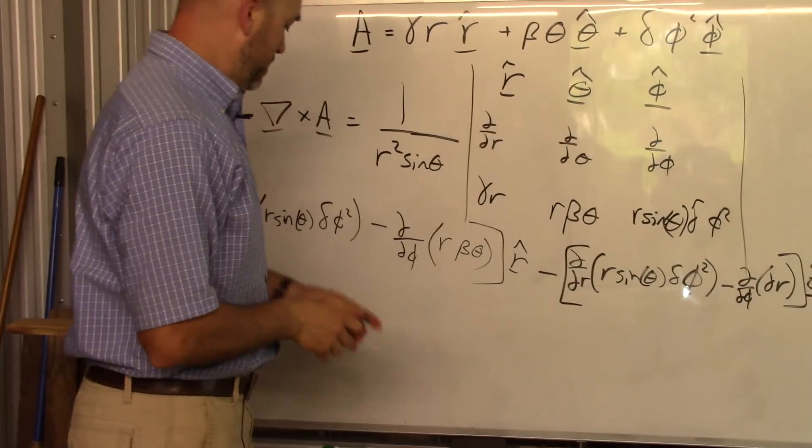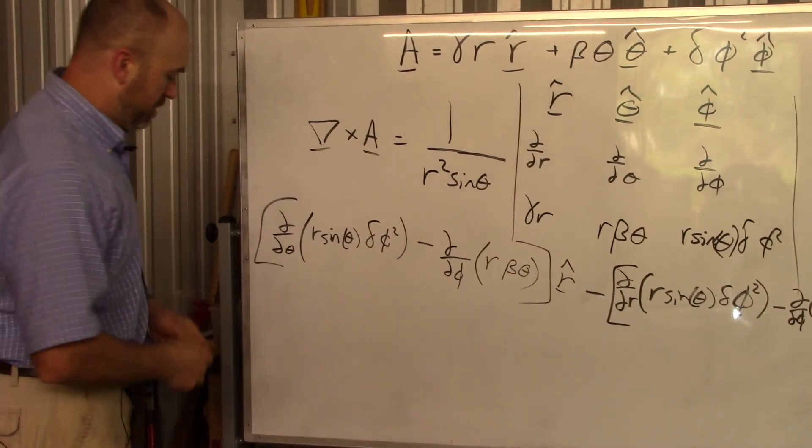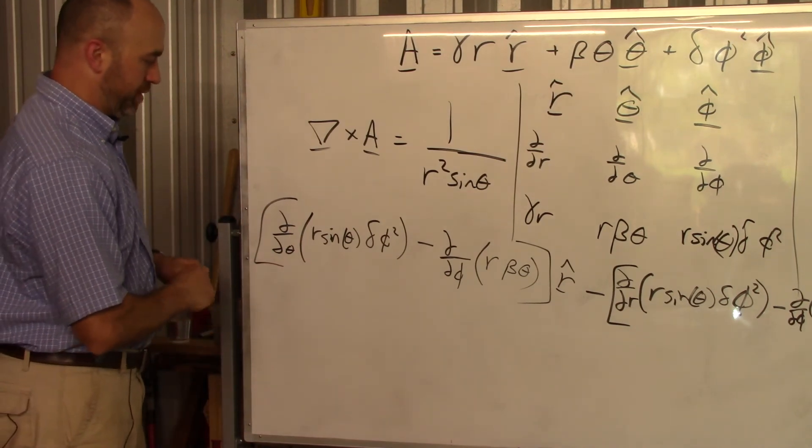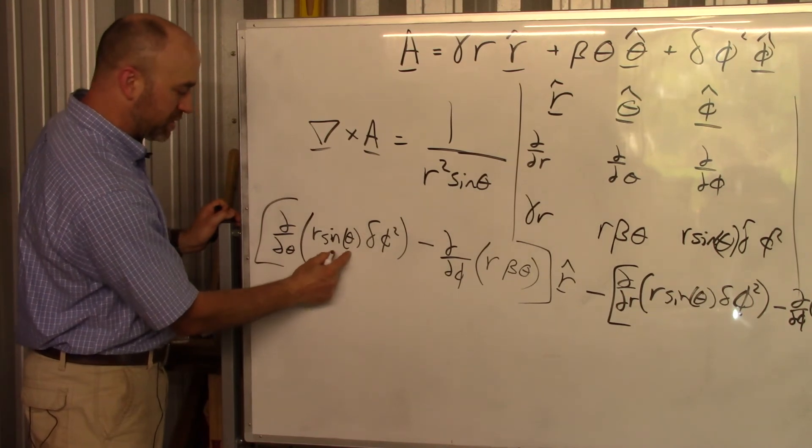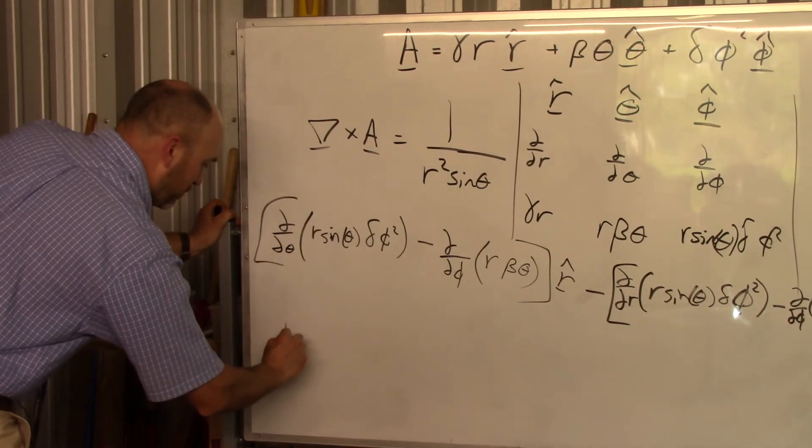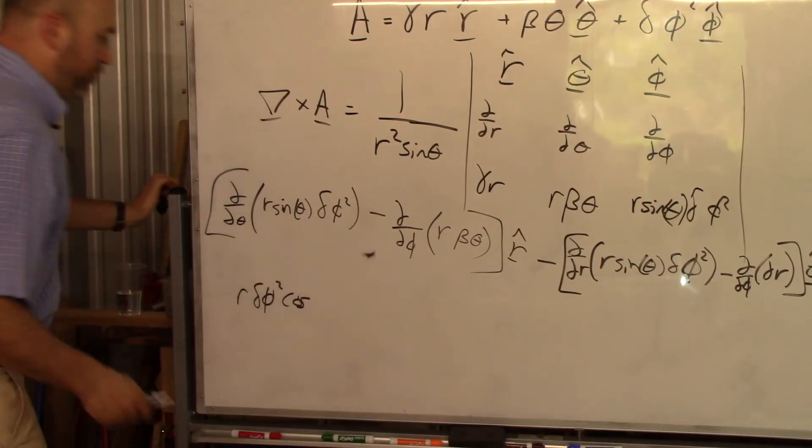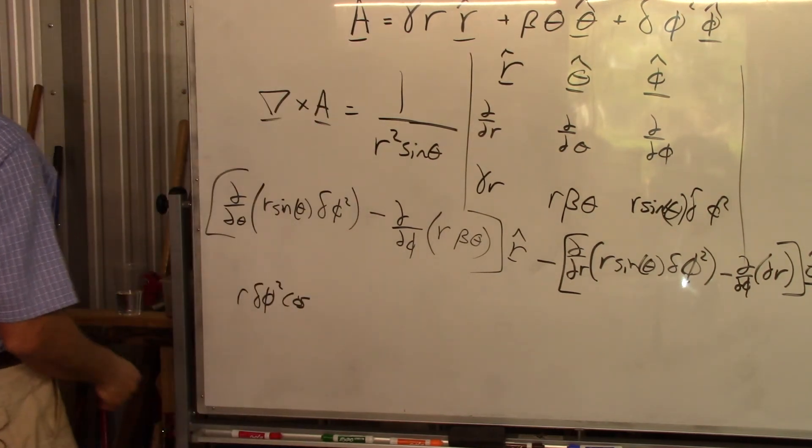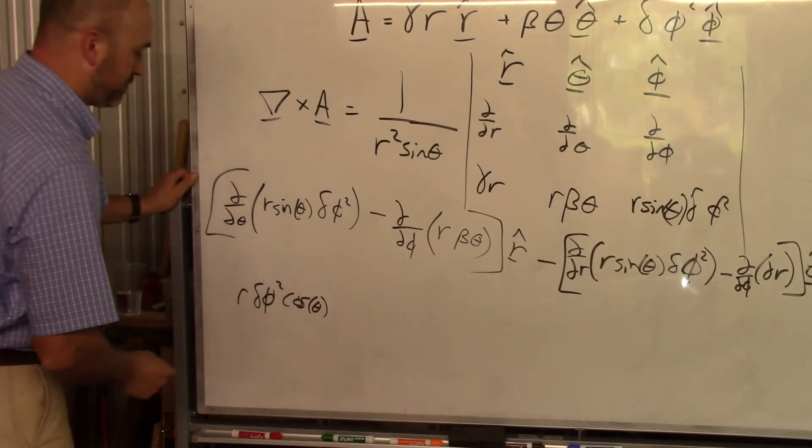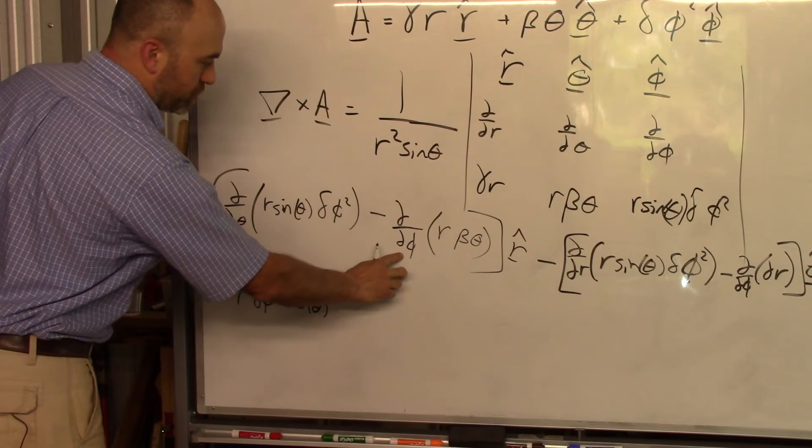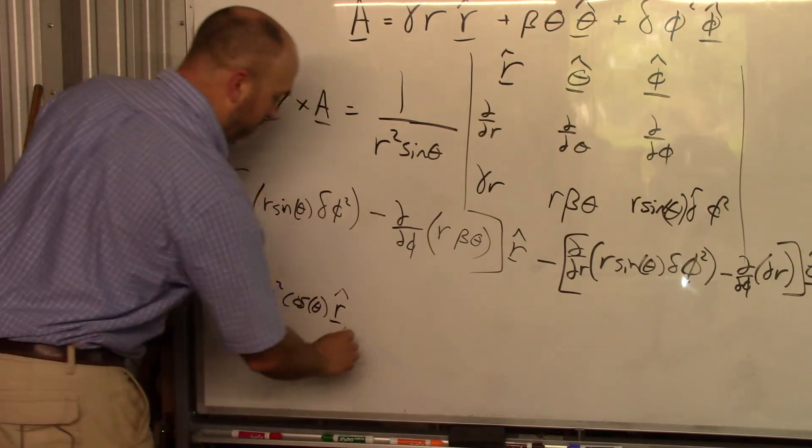Okay, so now there's several pieces in here that just go away. Let's see. This first one is going to give us everything's a constant. This is derivative with respect to theta. So that only acts on the sine theta. So everything else stays put. So we're going to have an r delta phi squared times a cosine. Oh, there's a wasp in my workshop. That's a cosine of theta. And then this is derivative with respect to phi. So that goes away. And so we just have an r-hat here.